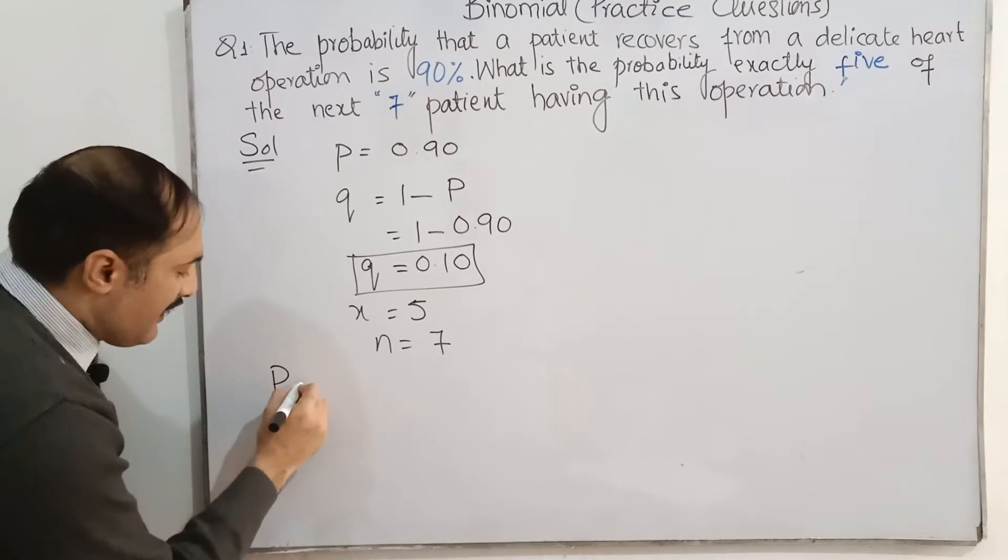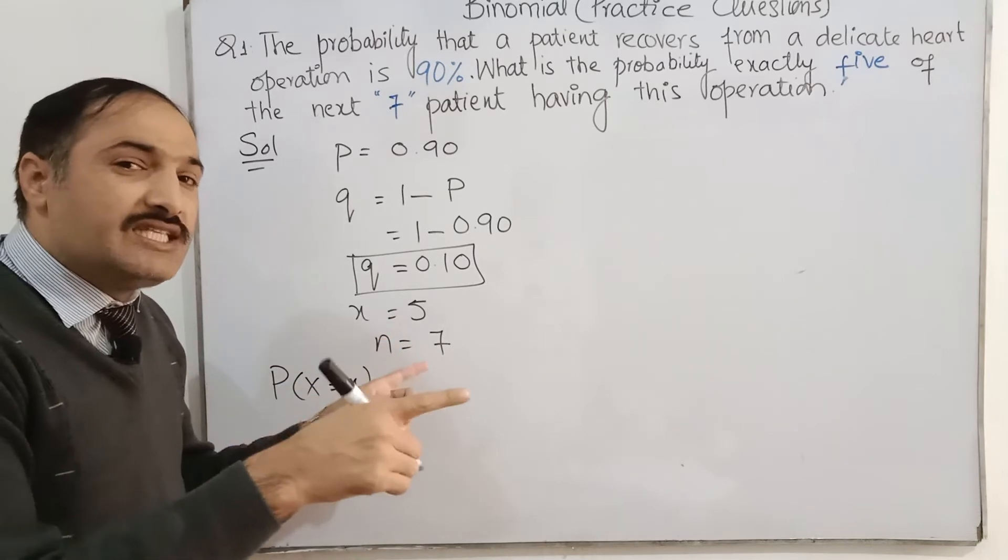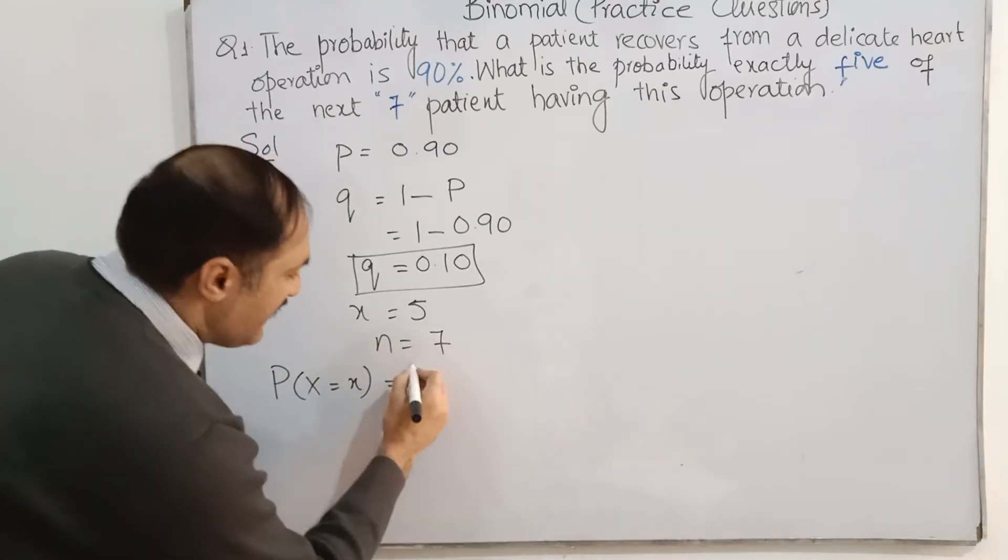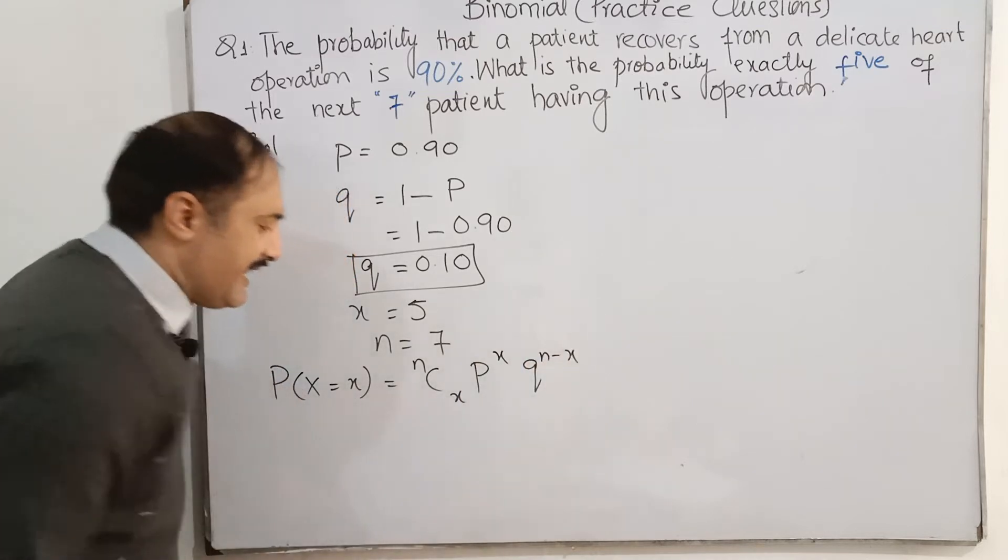Dear students, probability of x is equal to x. First, I will write the formula. After that, I will put these values into this question. Here, nCx, P^x, Q^(n-x).